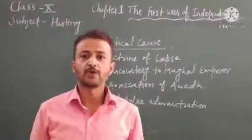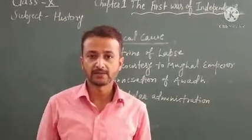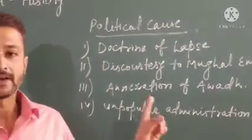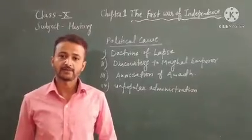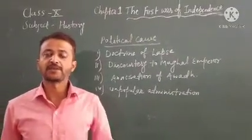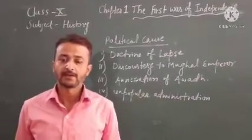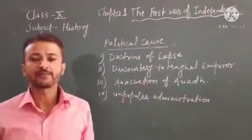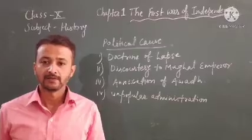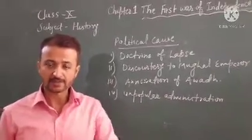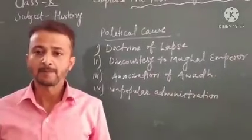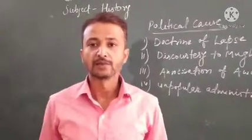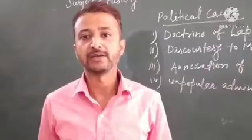So what were the causes behind it? Let's understand this. At that time, the Britishers had annexed most of the territories of India. By the mid-19th century, that is 1857, the Britishers had occupied almost every part of the country. At that time, the rulers were the Mughals, and the Mughals existed at that time only in name.